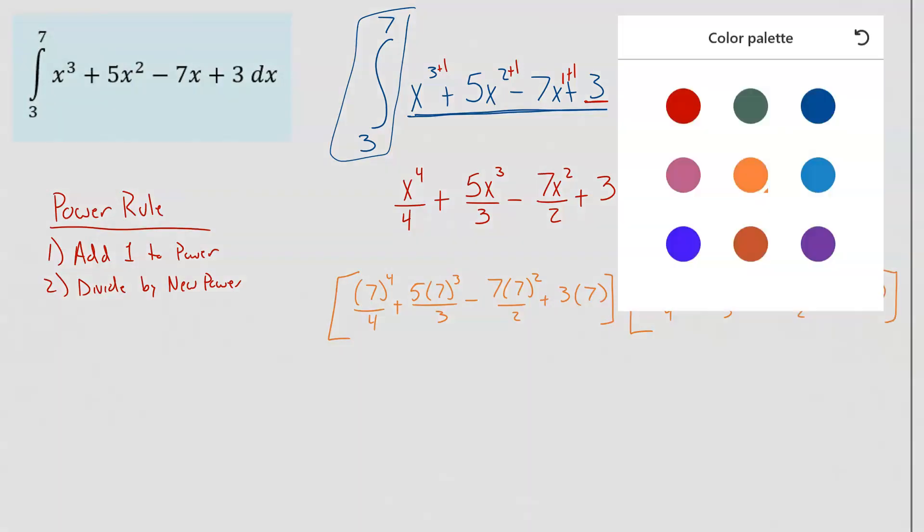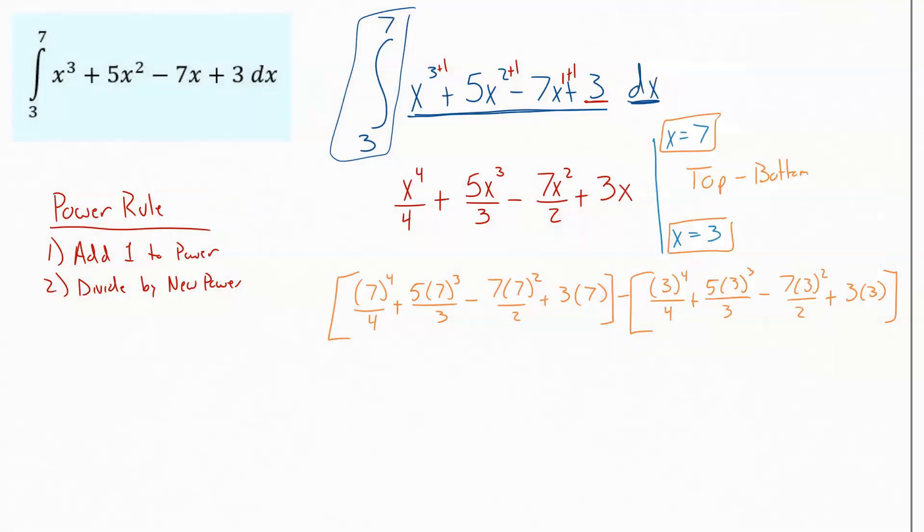And now you just need to calculate out those individual values. So for this first piece right here, plugging all that into your calculator, you would get out this lovely number, 1,257 divided by 12. And then we're going to subtract off of that. We would calculate all that out, pop that into a calculator, and you'd end up with 171 over 4.